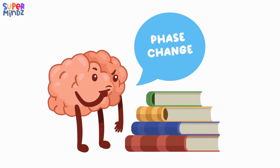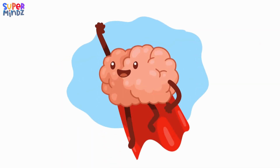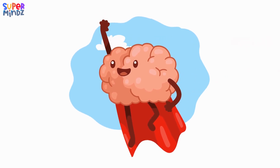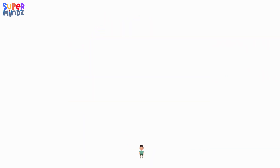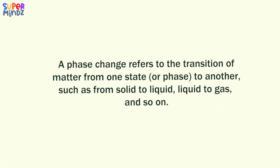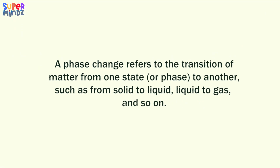Hi kids! Today let's look into the five types of phase change. A phase change refers to the transition of matter from one state to another, such as from solid to liquid.